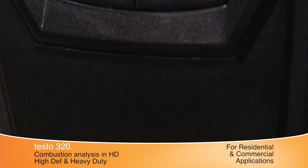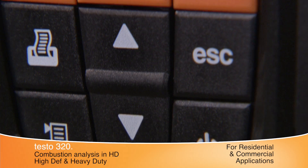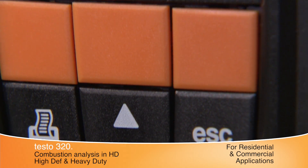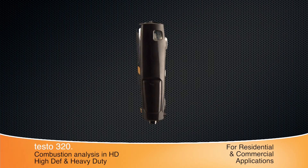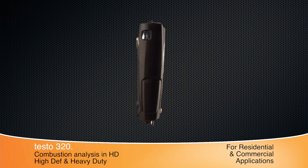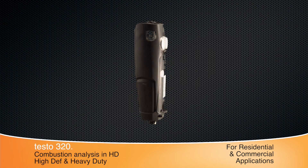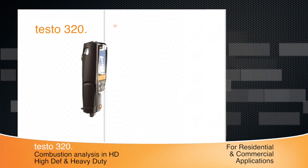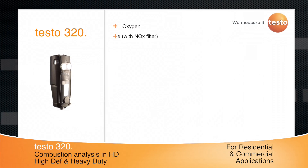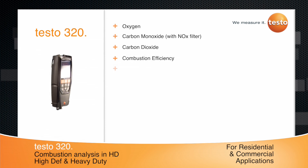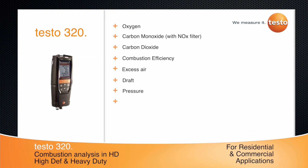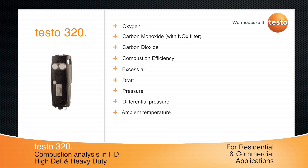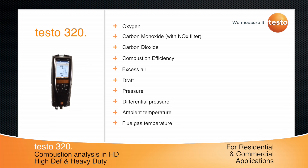It contains a complete set of productivity applications designed to provide a better understanding of a system's combustion setup. The HD display shows critical information including oxygen, carbon monoxide, carbon dioxide, combustion efficiency, excess air, draft, pressure, and differential pressure. It also measures ambient and flue gas temperatures.